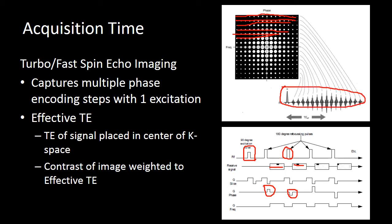One important thing to note: our TE is going to be dependent on which echo goes into the central line of k-space, because that central line of k-space contributes an outsized impact on our contrast. Which echo we use to fill in that central line will determine what our TE is. If we wanted it to be weighted differently, we could use a different echo to fill in k-space, which would double the TE.